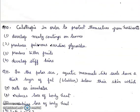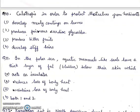Tenth question: calotropes in order to protect themselves from herbivores first, develop waxy coatings on leaves; second, produce poisonous cardiac glycosides; third, produce bitter fruits; fourth, develop stiff hairs. Right answer will be second, produce the highly poisonous cardiac glycosides.